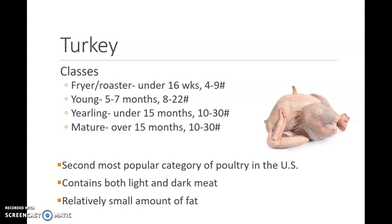Turkey is the second most popular category of poultry in the United States, after chicken of course. Turkey contains both light and dark meat, and it has a relatively small amount of fat in comparison to how large it is. However, turkey legs and turkey thighs are not the same as chicken legs and chicken thighs — there are a lot more tendons. You can think of this in comparison to the shoulder cut of a cow; it is going to be very tough and have a lot of connective tissue going through it that needs to be slowly cooked.